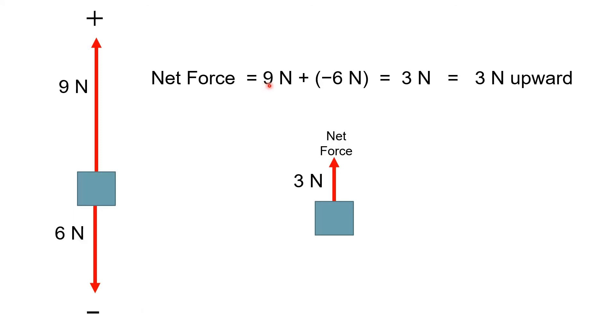So in this case, nine newtons plus negative six. Again, we're adding including direction. So we end up with a positive three, which implies three newtons upward. So that's the whole perspective from the box as far as the reaction that it's going to have to that force and the change in its motion.